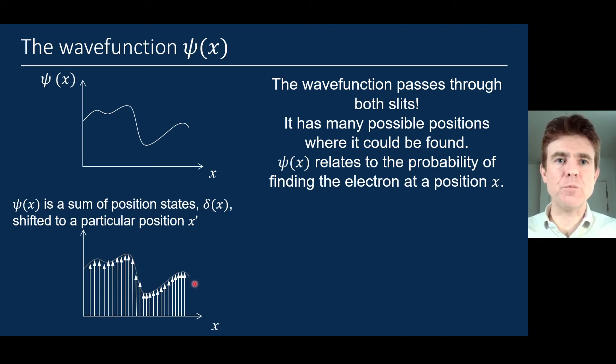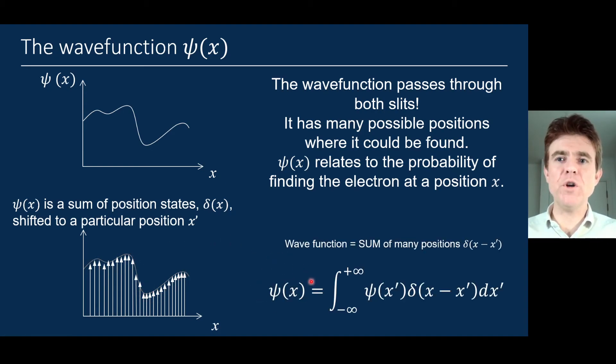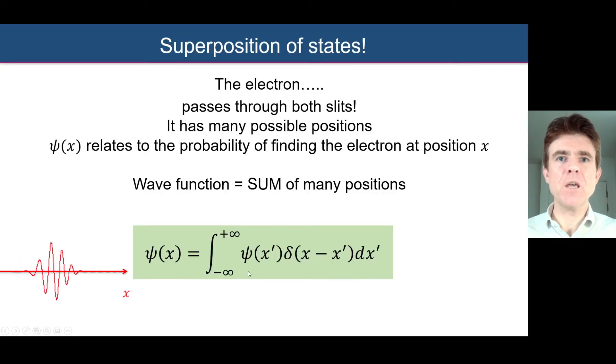We express the overall wave function as a summation over these position states, delta x, each of them located at every possible position x prime along that axis. The coefficient for each of those position states corresponding to the amplitude here is just given by the wave function amplitude itself. Sum them all up, and that gives us the wave function. What we're saying is that an electron is a wave function which passes through both slits. That wave function relates to the probability of finding the particle at any given position x. The wave function is a summation of many possible positions, delta x, and we consider all the positions x prime where it could have been.